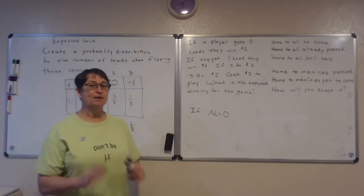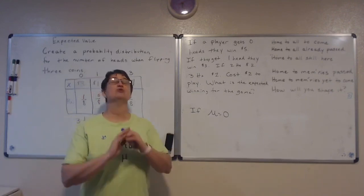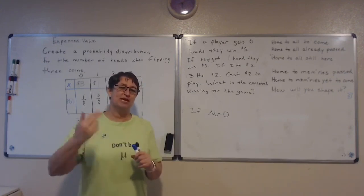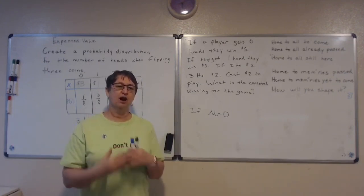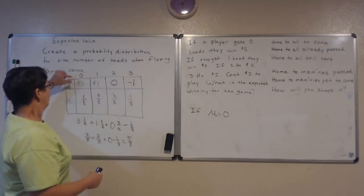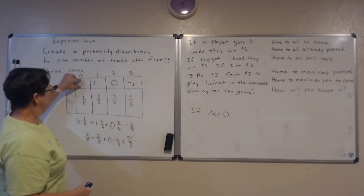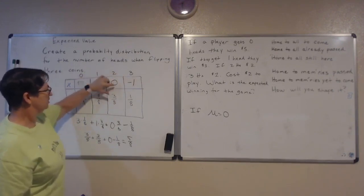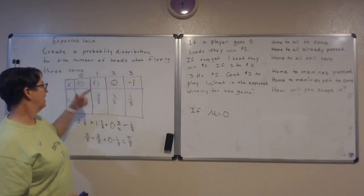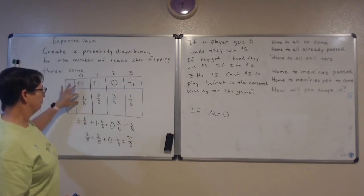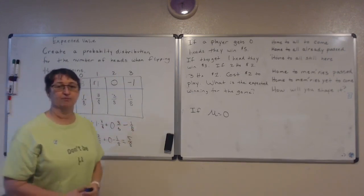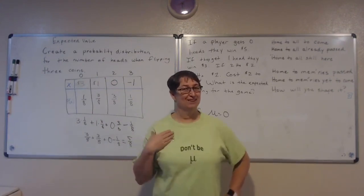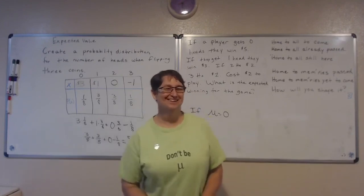To summarize: the expected value is just a weighted mean — on average, what happens if we repeat the experiment over and over? Find your outcomes first, quantify them with numbers, find the probability of each, then multiply and add. That's it — math made simple.